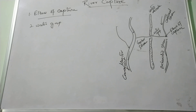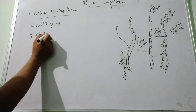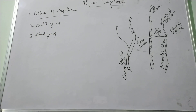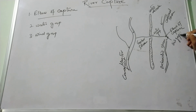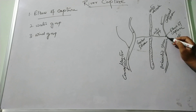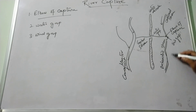Next is the wind gap. The wind gap is the dry portion of the headward stream, just between the elbow of capture and the lower portion of the consequent stream.